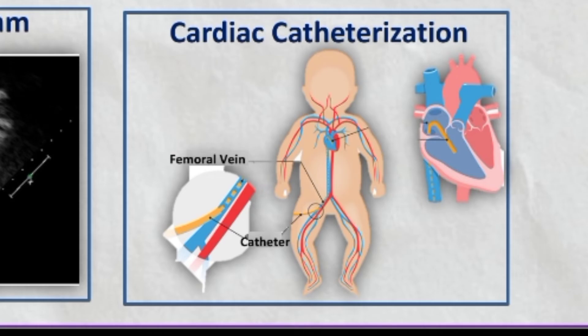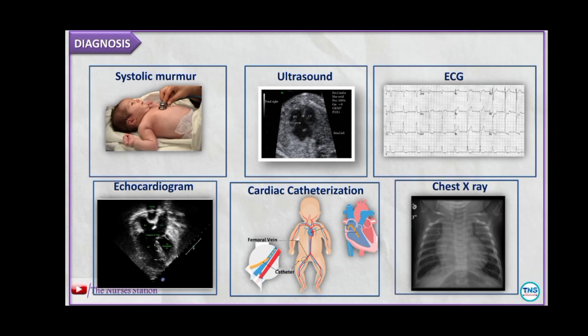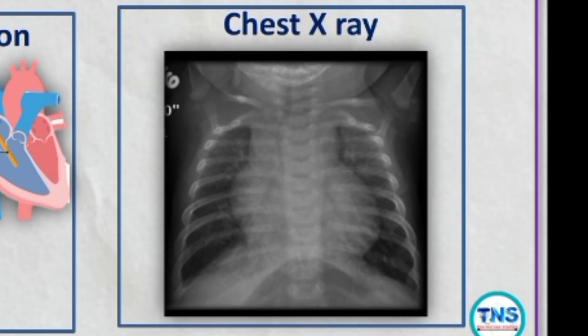Cardiac catheterization gives very detailed information about the structures inside the heart. In this test, a small thin flexible tube called a catheter is inserted into a blood vessel in the child's groin, then guided to the heart. The doctor injects contrast dye to visualize the heart more clearly. A chest x-ray can also reveal heart failure.